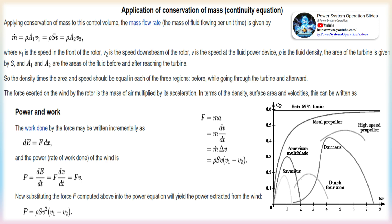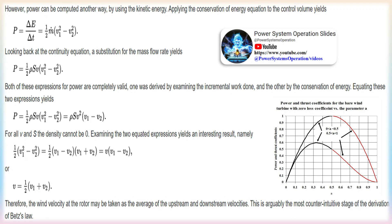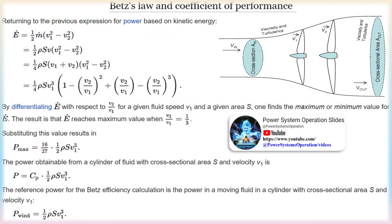The Betz limit places an upper bound on the annual energy that can be extracted at a site. Even if a hypothetical wind blew consistently for a full year, no more than the Betz limit of the energy contained in that year's wind could be extracted. Increasing system economic efficiency results from increased production per unit per square meter of vein exposure, and an increase in system efficiency is required to bring down the cost of electrical power production.